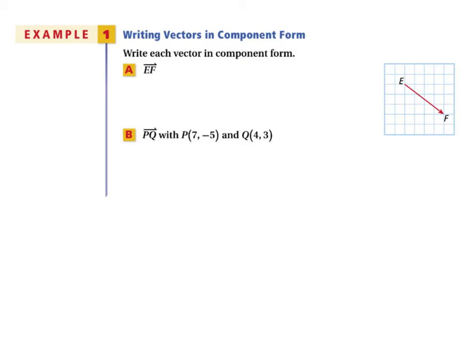In example 1, we write each vector in component form. For vector EF, we look at the horizontal change and vertical change. The initial point is here and the terminal point is here, so the horizontal change is right 4, and the vertical change is down 3. That gives us vector ⟨4, −3⟩.